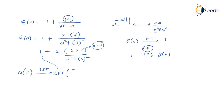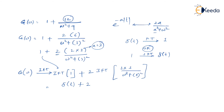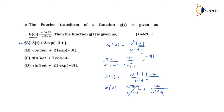The inverse Fourier transform of 1 is δ(t), and the inverse Fourier transform of 2·3/(ω² + 3²) is e^(-3|t|) with a = 3. So g(t) = δ(t) + 2·e^(-3|t|). This is the final answer for g(t).